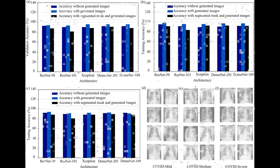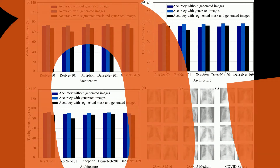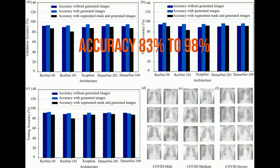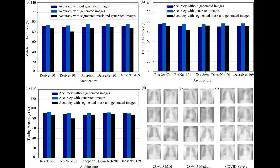This is how the final results look like. Accuracy varies between 83 to 98% and improves a lot with the use of CGAN technology.